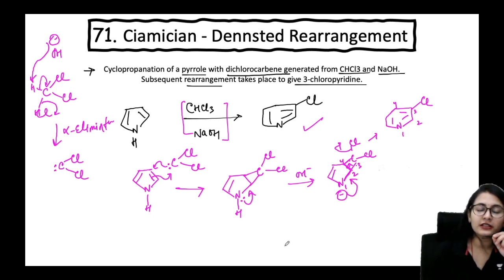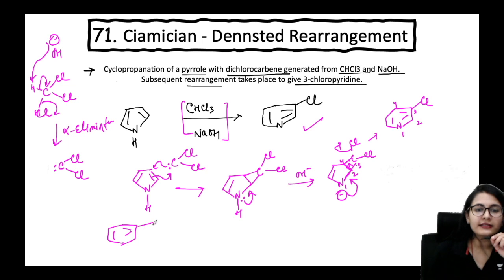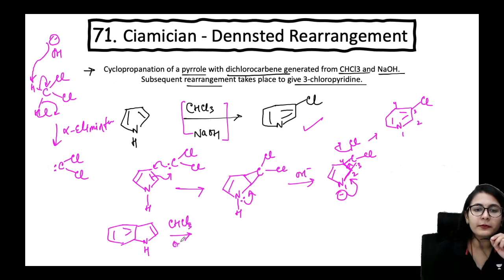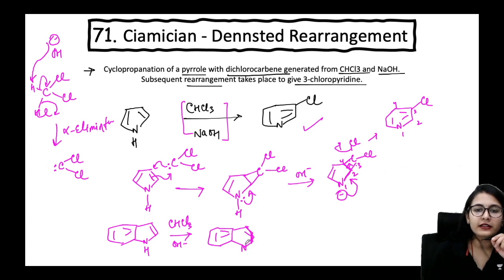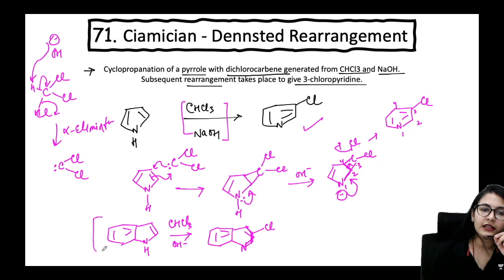There are plenty of questions on this mechanism. Will you get the same reaction with the indole molecule? Absolutely — using chloroform and base on indole, you get ring expansion to a six-membered ring, giving quinoline. It will also be 3-substituted. The same reaction works on indole to give this product.